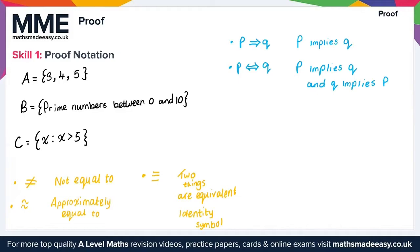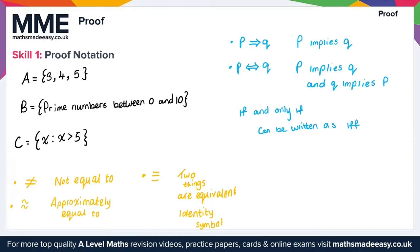Note that 'if and only if' can be written as IFF — you might see that sometimes in textbooks, so it's important to note. That gives us everything we need for skill 1 on proof notation.